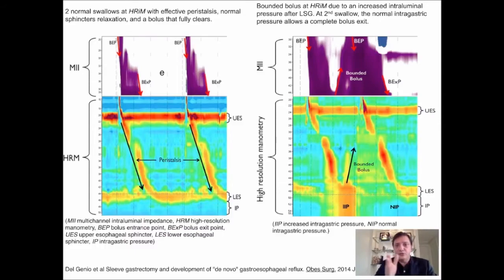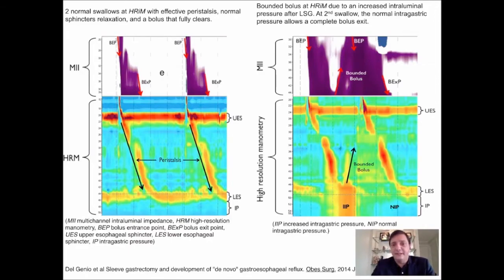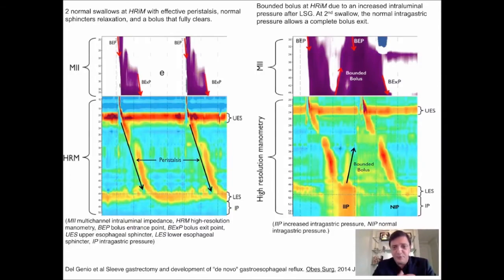So let's go to the right side. You're going to see the same high resolution manometry graph taken months after the sleeve gastrectomy. And what drives our attention is that if we look at the inferior bar, the yellow one, we're going to see that the stomach is pressurized with a dramatic increase in pressure.